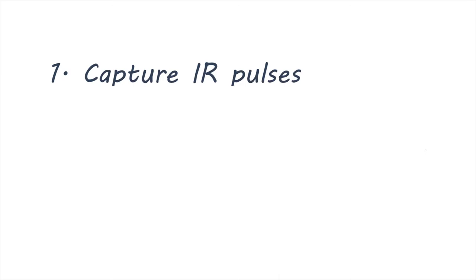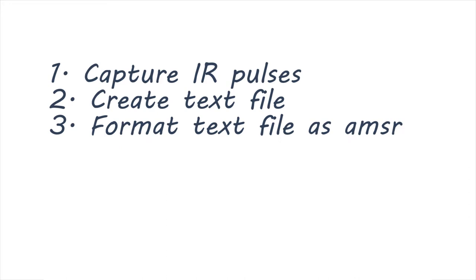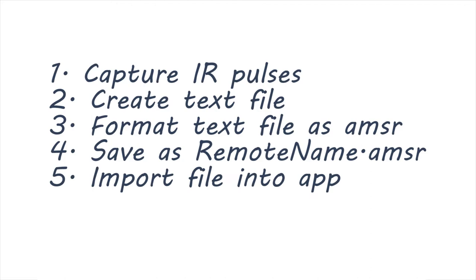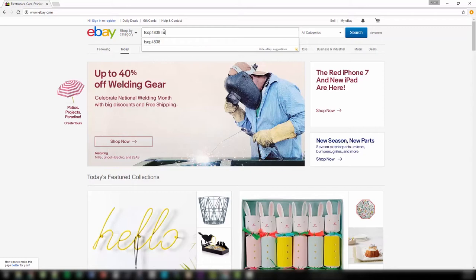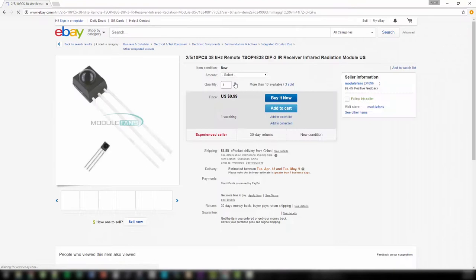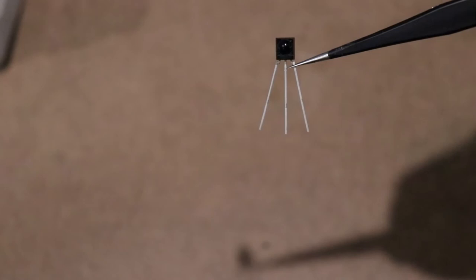I figured all I had to do was capture the IR codes from my remote, put them into a text file, format them in the right way, then name the file with an extension of .amsr, and then try to import them into the app. First, I knew I would need an IR receiver to capture the IR pulses from my remotes. I found the 38kHz TSOP 4838 IR receiver on eBay in a pack of 10 for about $3.50.